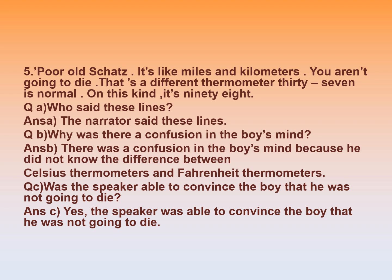The next extract is: 'Poor old Skatz. It's like miles and kilometers. You aren't going to die. That's a different thermometer. 37 is normal. On this kind, it is 98.' (a) The narrator said these lines. (b) There was a confusion in the boy's mind because he did not know the difference between the Celsius thermometer and the Fahrenheit thermometer. (c) Yes, the speaker was able to convince the boy that he was not going to die by explaining the difference between the Celsius and Fahrenheit thermometers.